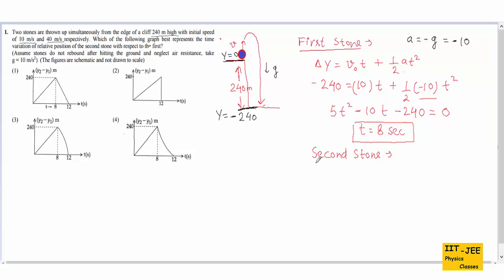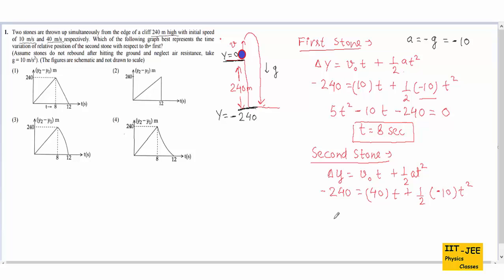Now for the second stone, we use the same formula: delta y equals v0·t plus half·a·t². The displacement is again minus 240, but the initial speed is 40 meters per second and acceleration is minus 10. This gives the equation 5t² minus 40t minus 240 equals 0. Solving it, we get t equals 12 seconds, so the second stone takes 12 seconds to reach the ground.